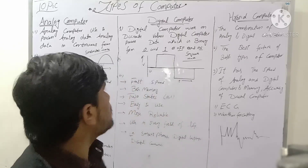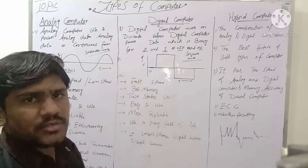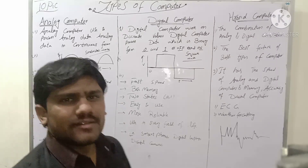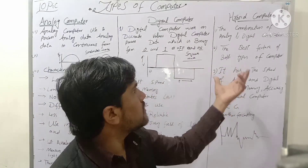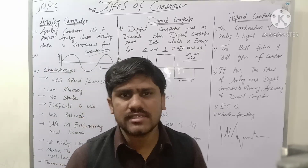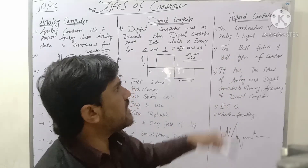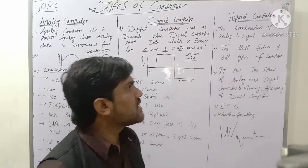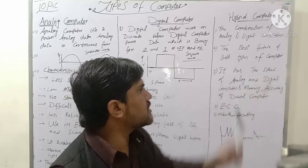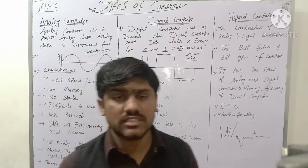Think of it this way — analog and digital are the two parent computers, the father and mother computers, and the hybrid computer is the child computer. It is the combination of analog and digital, taking the best features of both types of computers.